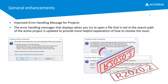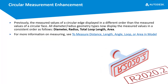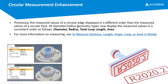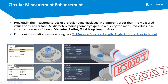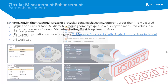Error handling for projects has been improved. In previous releases there were quite a lot of dialogues that would pop up and didn't really make much sense to new users. The new dialogue is user friendly and even has a link which takes you to a help file — for example, how to add a search path to an active project. Circular measurement has also been tidied up: we now always get diameter followed by radius — diameter, radius, total loop length, area — consistently.